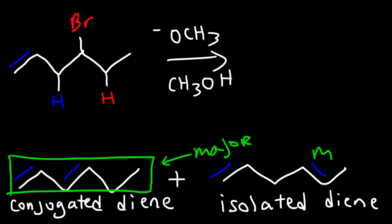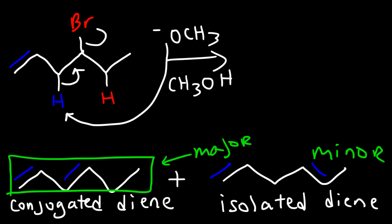The minor product is the isolated diene. To draw the mechanism: the base goes for the hydrogen, the carbon-hydrogen bond breaks, and the leaving group leaves. That's all we need to show the mechanism for the formation of that product. That's it for this video.